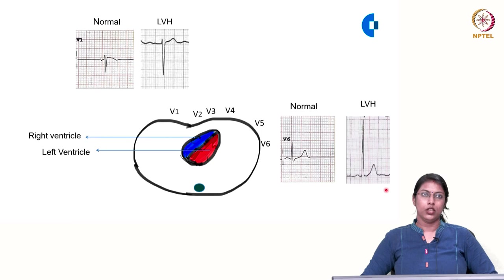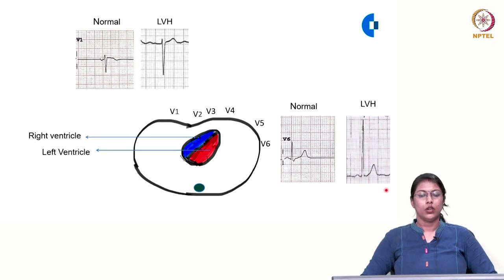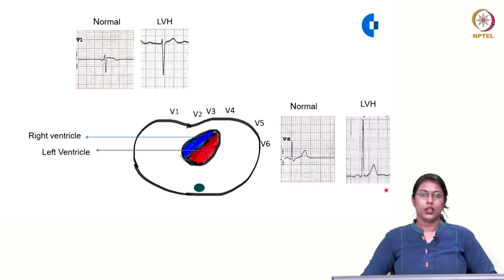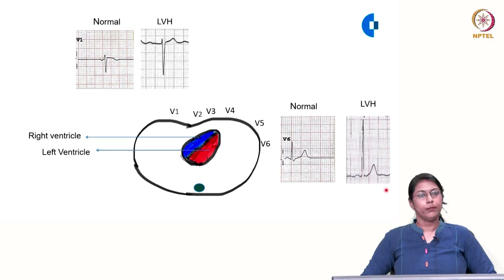The sensitivity of ECG to diagnose left ventricular hypertrophy is limited, so many criteria have been proposed. Most of these criteria rely on increased QRS voltage, because when the left ventricle is hypertrophic the thickness of the left ventricular myocardium is greater, and the amplitude of the QRS complex will also be increased.